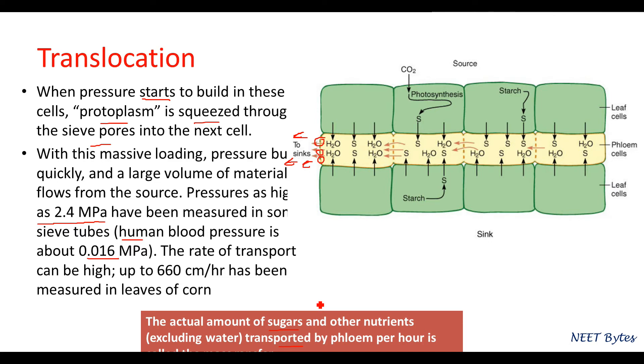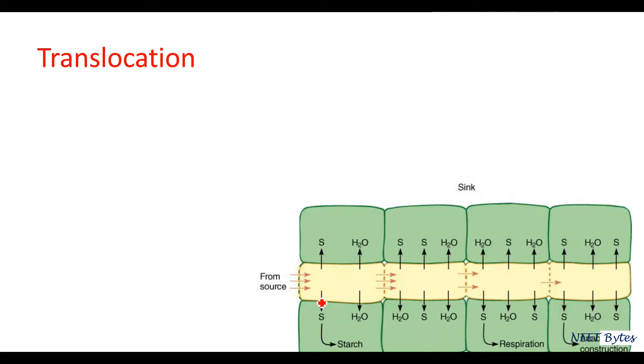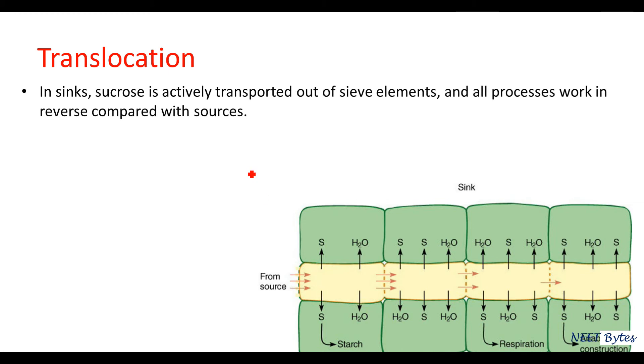Now have a look at the sink. What happens in the sink? In the phloem, sucrose is coming. In the sink, sucrose is actively transported out of the sieve elements, as you can see there. Here is sucrose, and sucrose is actively transported back to the area.